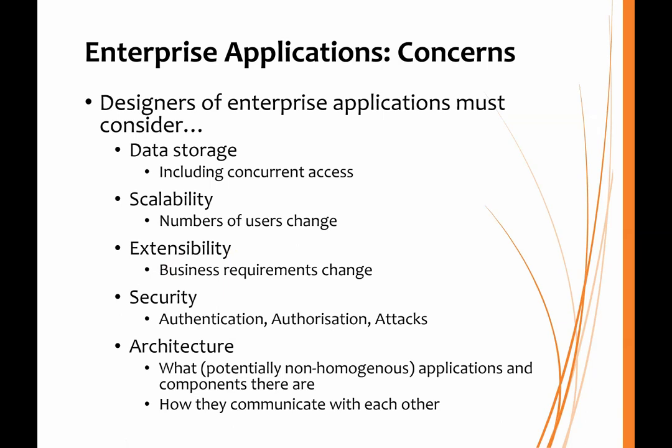Security issues include authentication — such as a username and password — and being authorized to access certain parts of the application and not others. Having logged in, you might be able to perform one kind of use case but not another because you're not authorized for the second one. We'll also need to think about architecture, as there might be non-homogeneous applications — for example, one written in Java and another in Python — and we'll need to think about how we can communicate between these different kinds of applications.